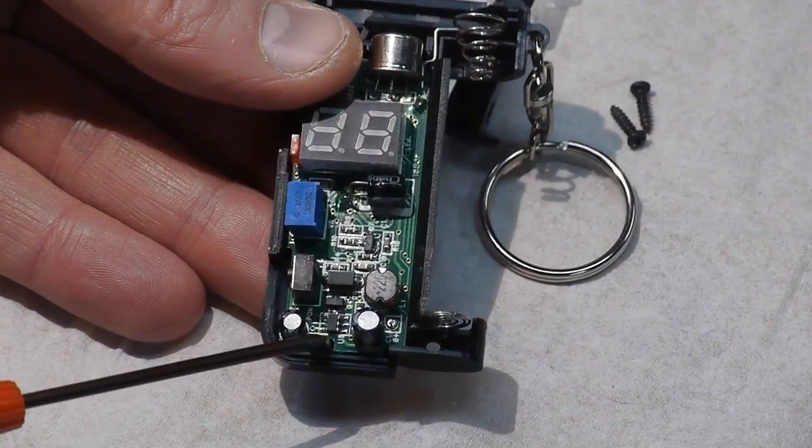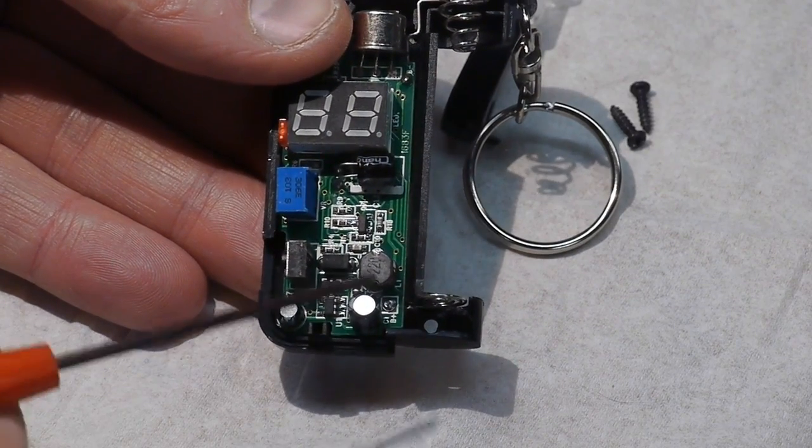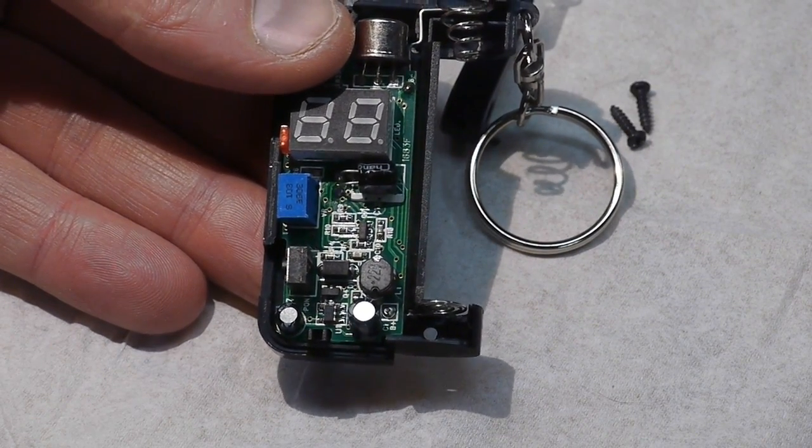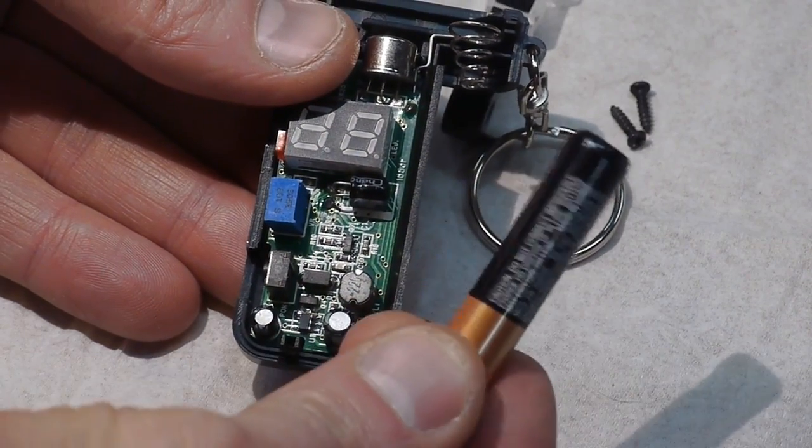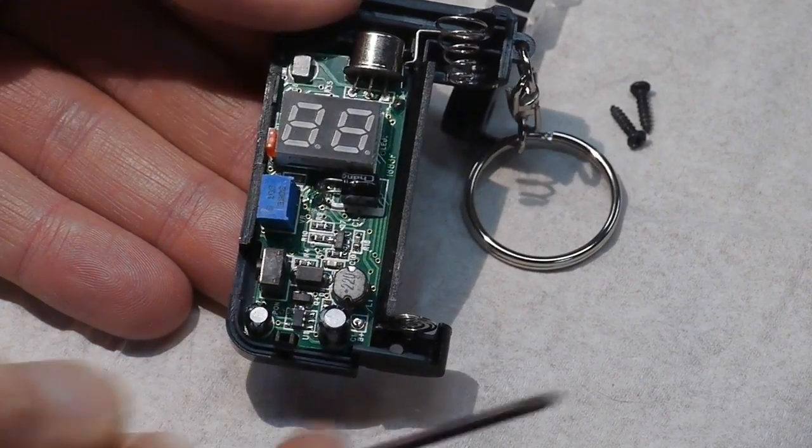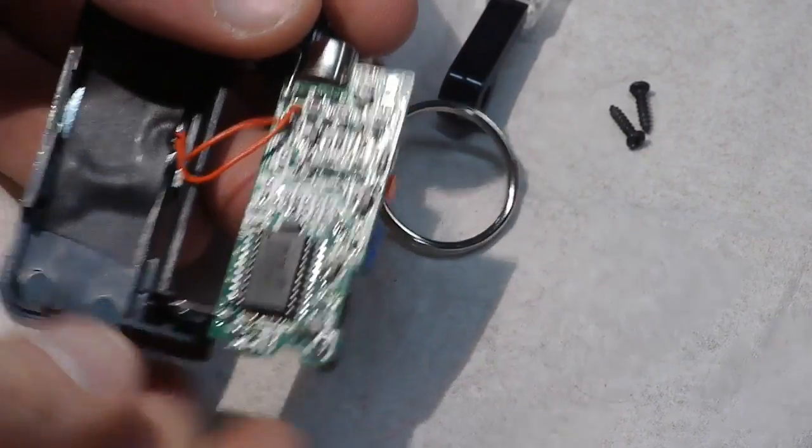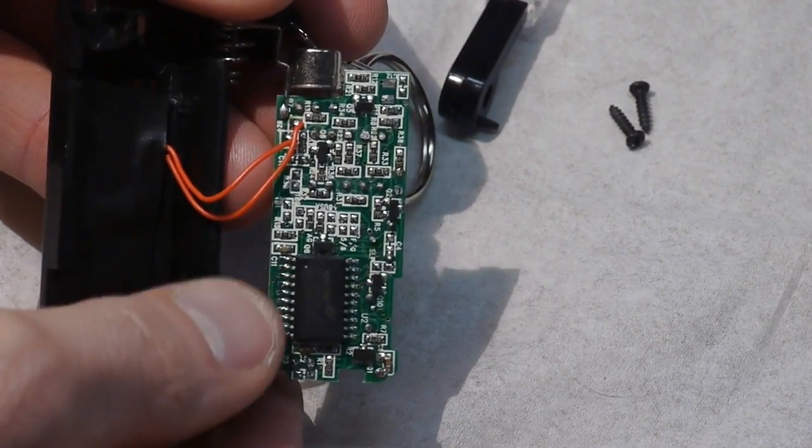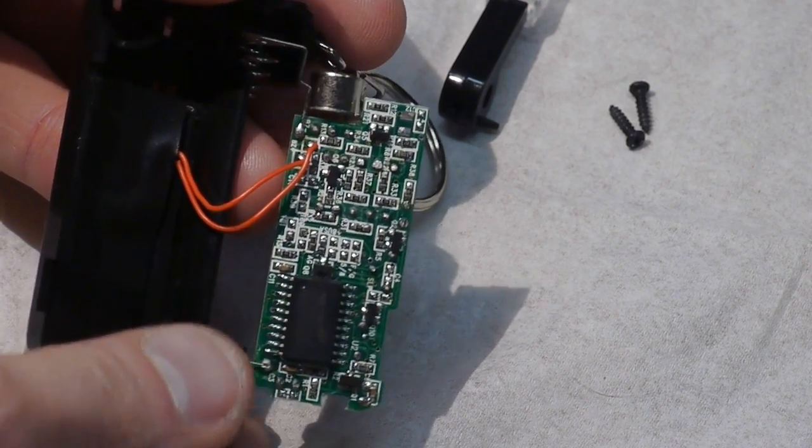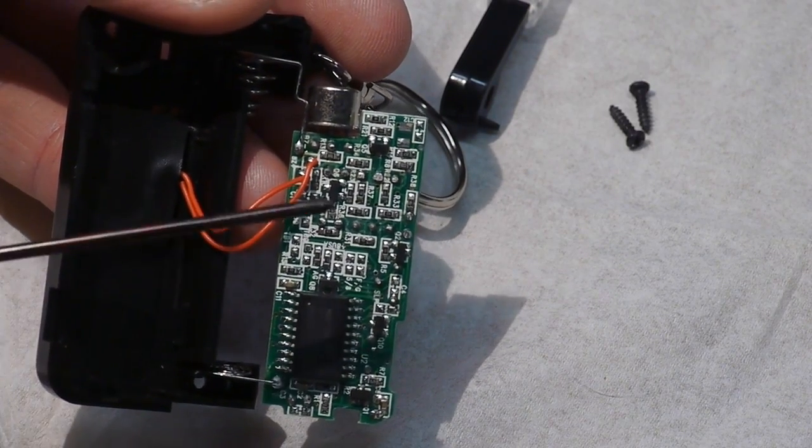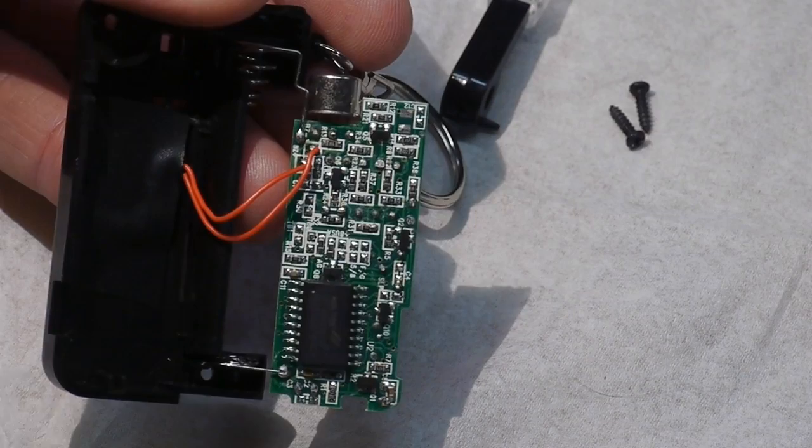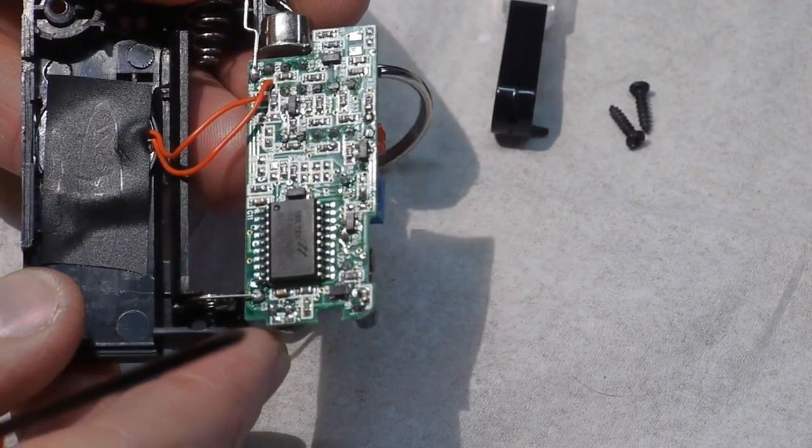This thing runs off of a single triple-A battery, and when we flip the board over, you'll see there's some components that definitely require more voltage than one and a half volts. So you've got a little microcontroller there, a bunch of passives, and some transistors.